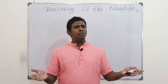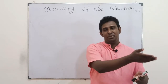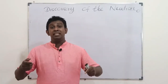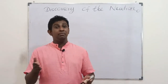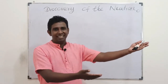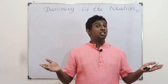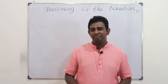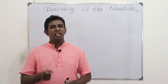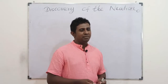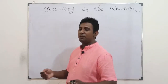When we talk about subatomic particles — electrons, protons, and neutrons — they were discovered in that order historically. In our earlier videos we looked at the discovery of electrons and protons, so it remains the neutron. That is what we are going to cover here.